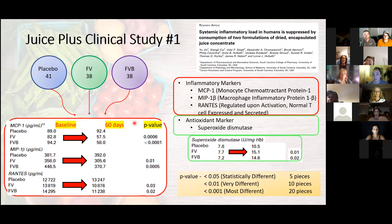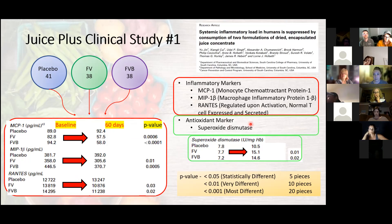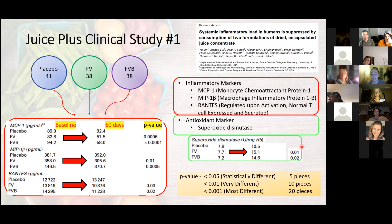The second thing they looked at were antioxidant markers. Antioxidants decrease oxidative stress, and oxidative stress causes inflammation — so the more antioxidants, the less inflammation, and you want to see these values increase. Once again, the placebo showed no P value — no difference. However, when taking Juice Plus, the antioxidant value almost doubled, with P values of less than 0.05, meaning a statistically significant increase in antioxidants.